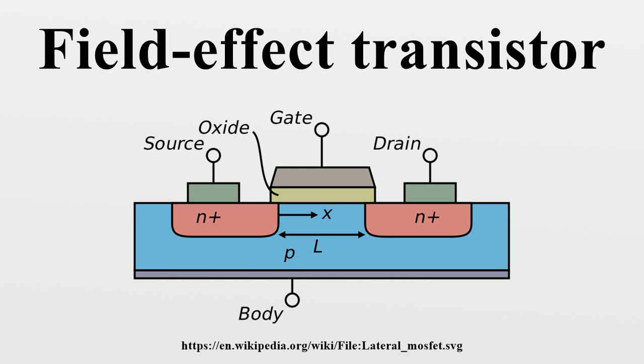Any increase of the drain to source voltage will increase the distance from drain to the pinch off point, increasing the resistance of the depletion region in proportion to the drain to source voltage applied. This proportional change causes the drain to source current to remain relatively fixed, independent of changes to the drain to source voltage.